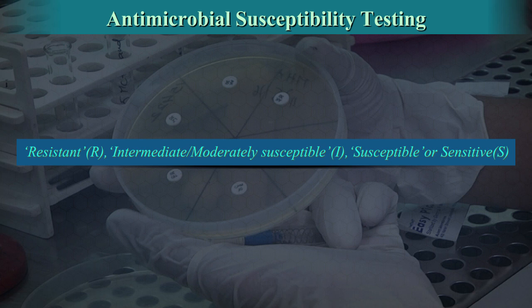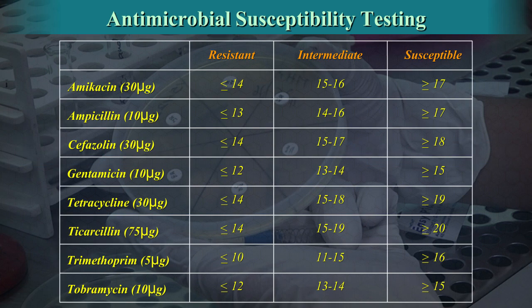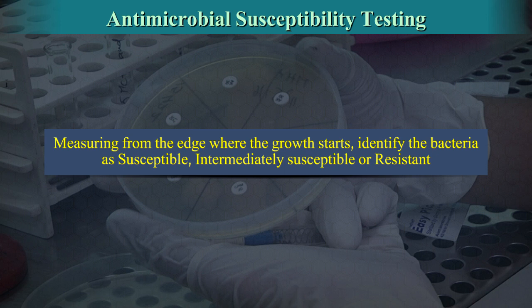Resistant indicates that the antimicrobial agent in question may not be an appropriate choice for treatment. Intermediate indicates a number of possibilities: the potential utility of the antimicrobial agent in body sites where it may be concentrated, for example the urinary tract, or if high concentrations of the drug are used; and possible effectiveness against the isolate, but possibly less so than against a susceptible isolate. Measuring from the edge where the growth starts, identify the bacteria as susceptible, intermediately susceptible, or resistant.